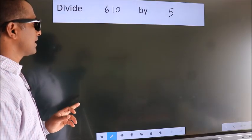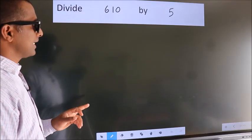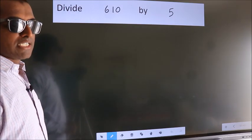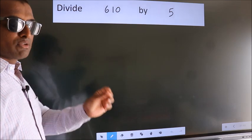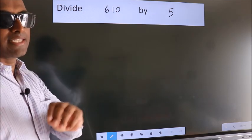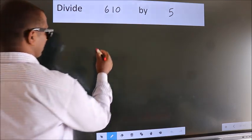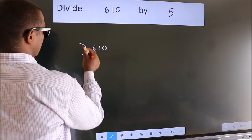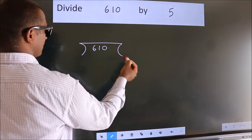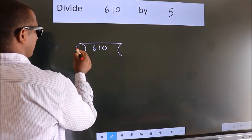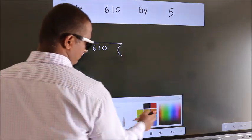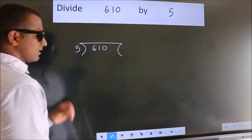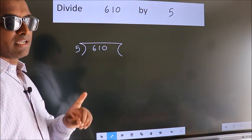Divide 610 by 5. To do this division, we should frame it in this way: 610 here, 5 here. This is your step 1.